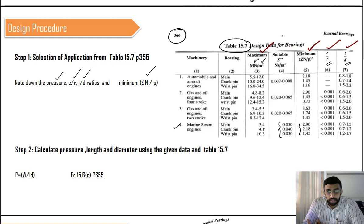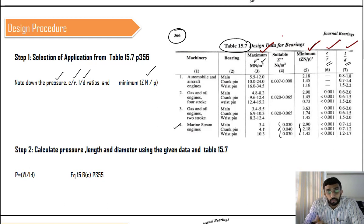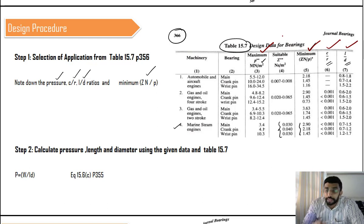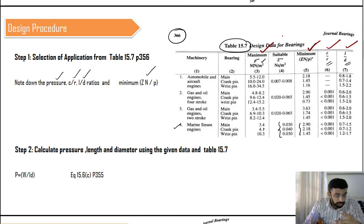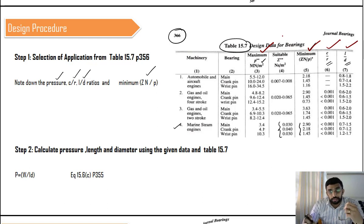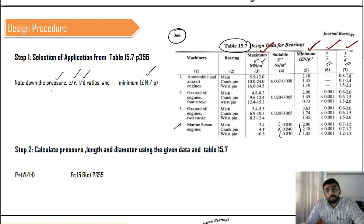Even though I am giving a specific procedure, it doesn't mean this exact procedure applies to every question — the format of questions can vary. You should follow this procedure, solve some problems, and build a deep knowledge of the equations and how data is arranged in the handbook. Once familiar, you can alter the procedure as needed. For now, note down the pressure, c/r, l/d ratio, and minimum ZN/P as a starting point.